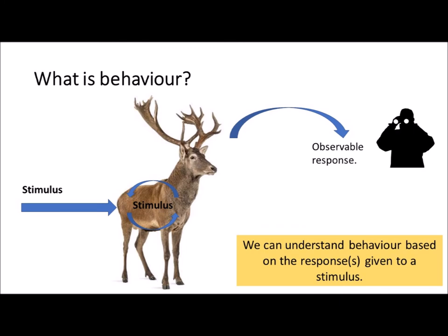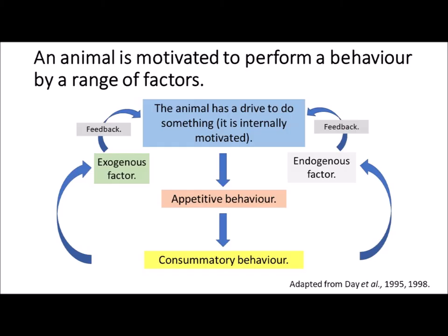Because behaviour is subjective — because we are watching and observing — we need to attempt to make it objective. Systematic measurement of behaviour under particular conditions can tell us precisely why that activity is performed. We've also talked about the idea of motivation and how animals are motivated to perform things at different times of the year, during different seasons, or in different physiological states.